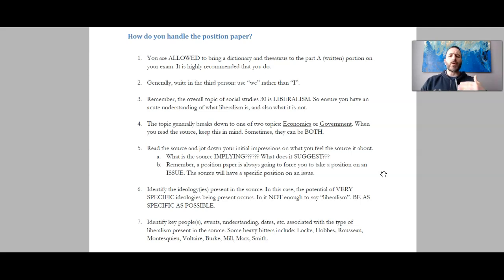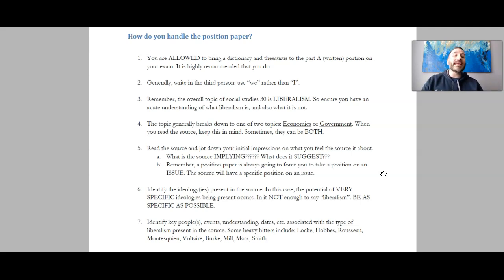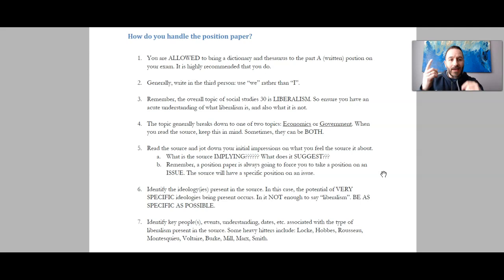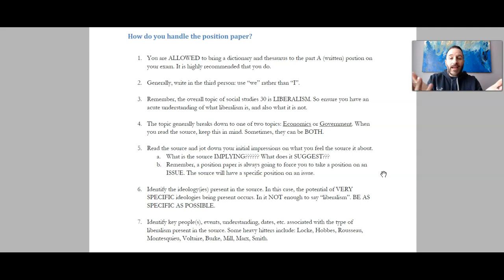Number five: read the source. When you get that source, first thing you're going to do is read it. Read the source and jot down your initial impressions on what you feel about the source. Think: what is the source implying? What does it suggest? What is it getting at? What is its perspective? Write that down. After you understand that perspective, you have to think: do I accept this or do I reject this? And to what extent — because you could totally accept it, totally reject it, or be somewhere in the middle.